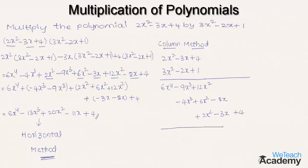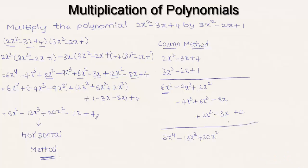Now let us add all three polynomials. We have only one term of 6x⁴, so we write 6x⁴. Then minus 9x³ minus 4x³ equals minus 13x³. Then 12x² plus 6x² plus 2x² equals 20x². The x terms: minus 8x minus 3x equals minus 11x. And we have only one constant term, which is 4. This is how we multiply a polynomial under the column method.